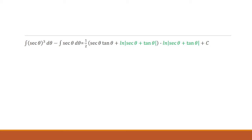Notice here I have two copies of ln of secant theta plus tangent theta — the first is being multiplied by one half, and the other is being subtracted — so I can simplify those.